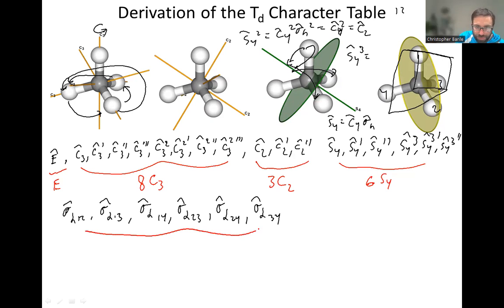And that's actually it for tetrahedral. So there's a lot of operations, but they group very nicely into only five classes. And so that's the first step to figuring out the character table. We have here a total of 24 symmetry operations in tetrahedral, but they group only into five classes. So that will simplify things for part two of this video, where we actually then derive the meaning of the character table now that we've found all the symmetry operations.